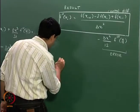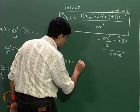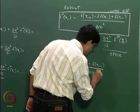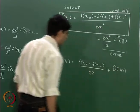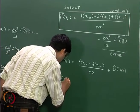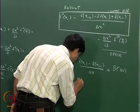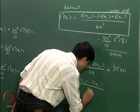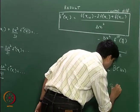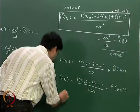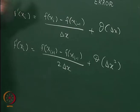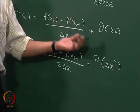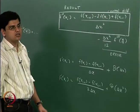To summarize the f dash expressions: f'(x(i)) equals f(x(i)) minus f(x(i-1)) divided by delta x, with error of order delta x — that is the backward difference. f'(x(i)) equals f(x(i+1)) minus f(x(i)) divided by delta x, with error of order delta x — that is the forward difference. And the central difference gives f'(x(i)) equals f(x(i+1)) minus f(x(i-1)) divided by 2 delta x, with error of order delta x squared. These are the derivations based on the Taylor series expansion.